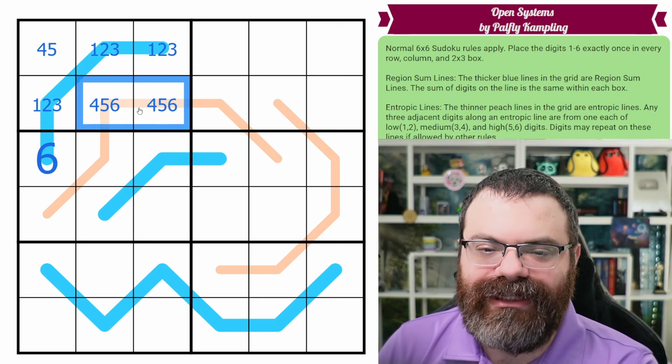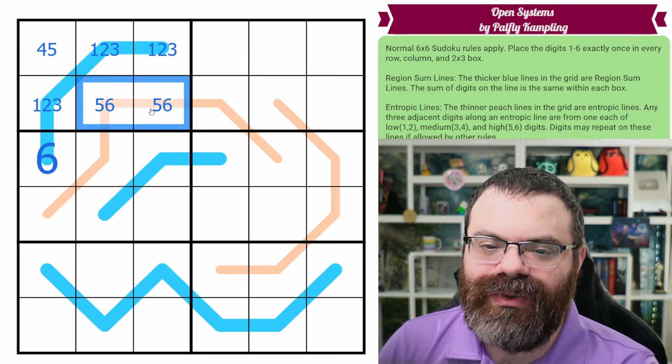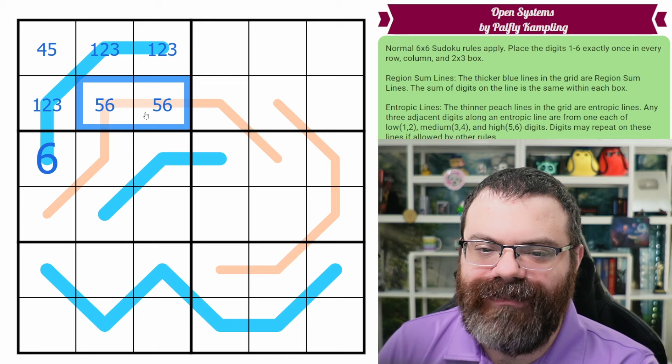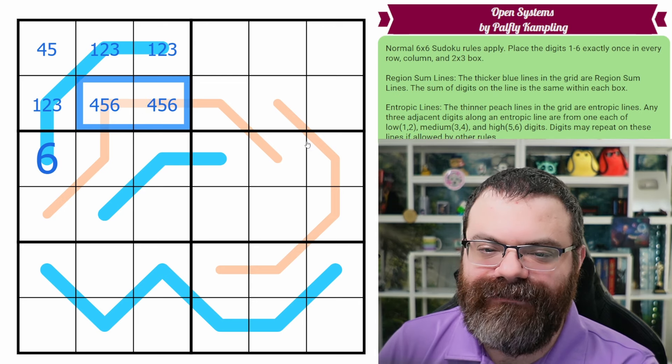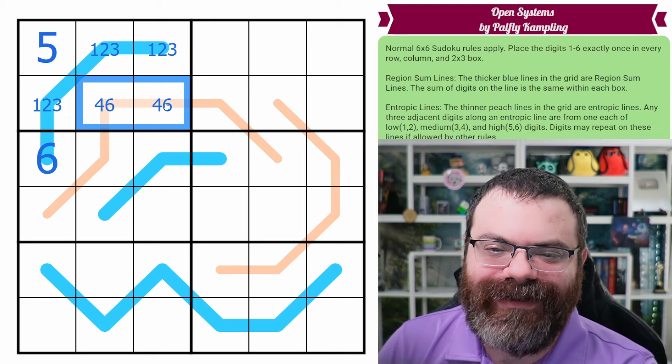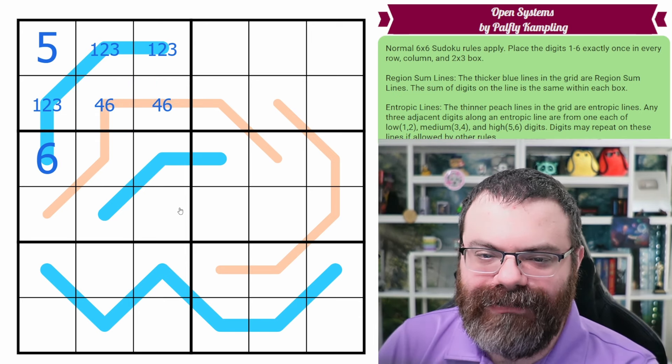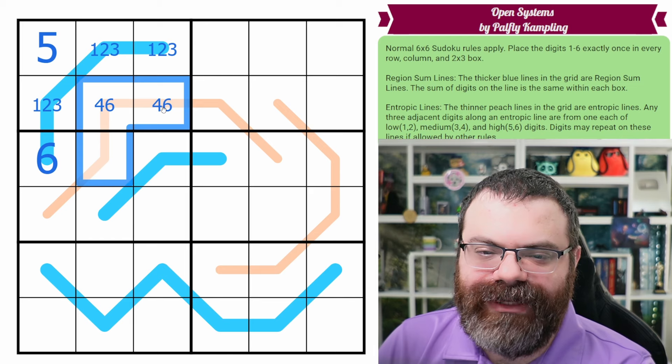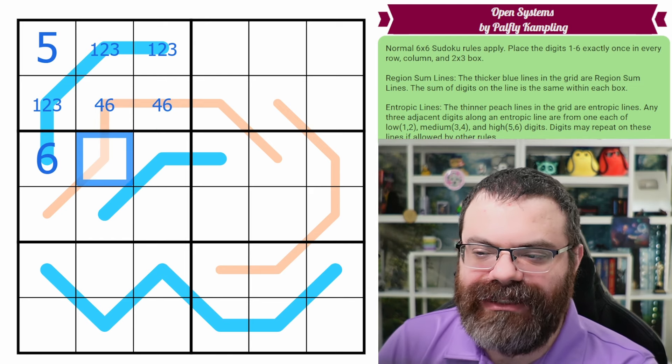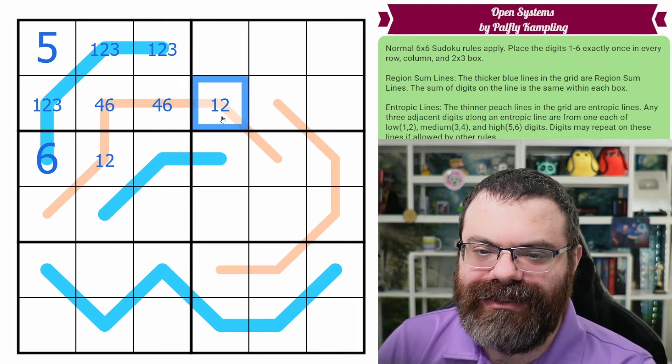And something I'll point out is that this can't be 5, 6, because that puts two highs next to each other on our entropic line. And that's not allowed. So this has to have the 4 in it, which means this ends up the 5, which means this is a 4, 6 pair. So it kind of bounces around and resolves itself. So this set of three has a medium and high, but it needs a low. So this has to be the low. Same with this set of three needs a low. So that's the low.